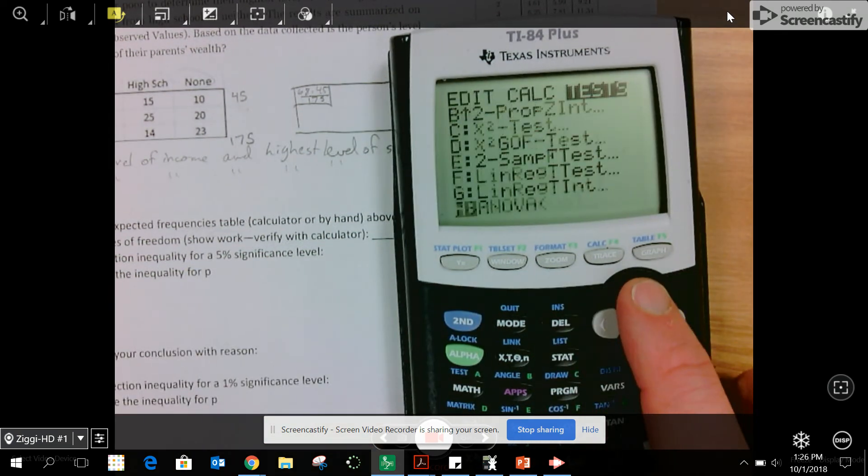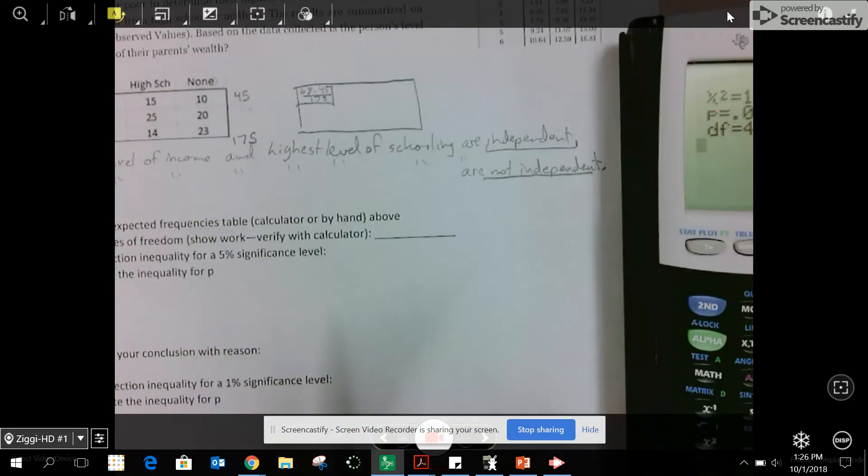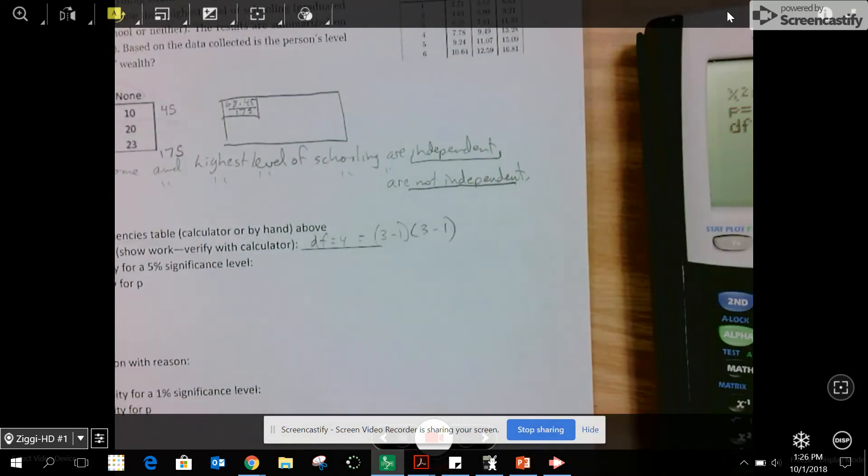Calculate the chi-squared. It says degrees of freedom is four. It says show work, verify with the calculator. So I know it's four, and that's from the rows minus one, so there's three rows, times the columns minus one, three columns. So that's basically two times two. That's where the four comes from.